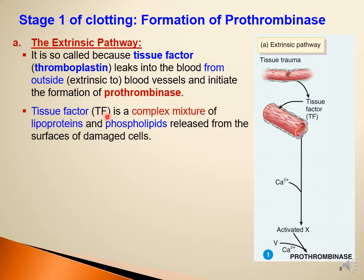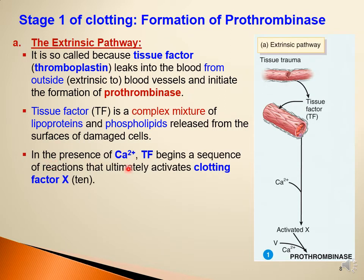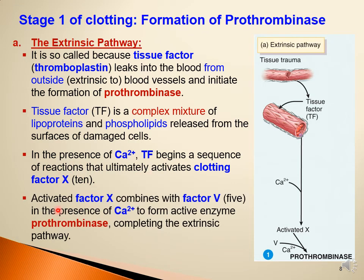Tissue factor is a complex mixture of lipoproteins and phospholipids released from the surface of damaged cells around the blood vessel. In the presence of calcium, tissue factor begins the sequence of reactions that ultimately activates clotting factor X. Activated factor X combines with factor V in the presence of calcium (factor IV) to form the active enzyme prothrombinase — completing the extrinsic pathway, which is part of stage one of the clotting process.